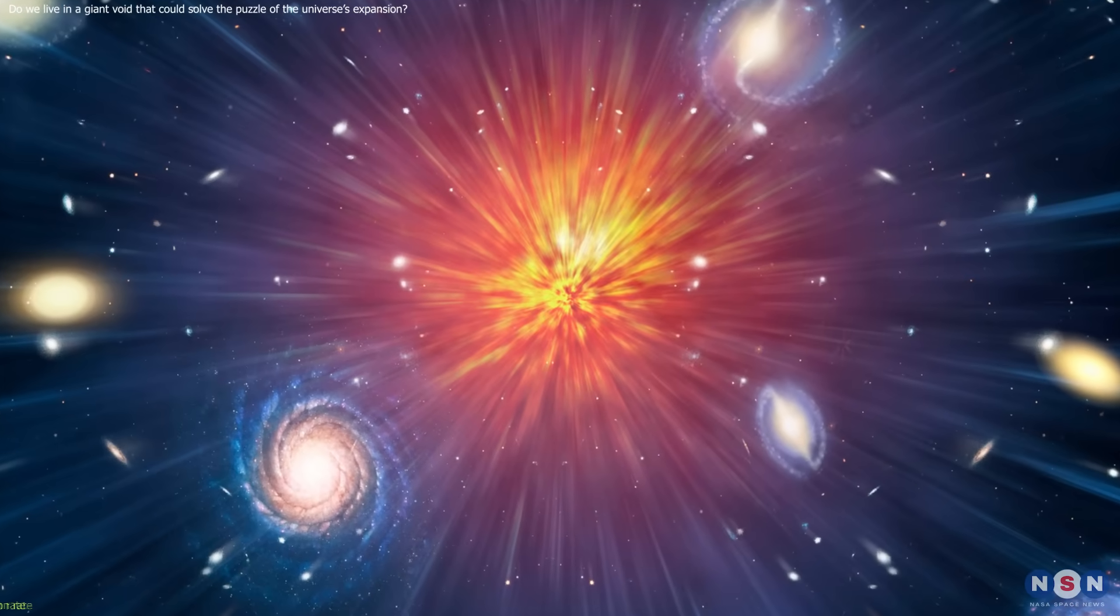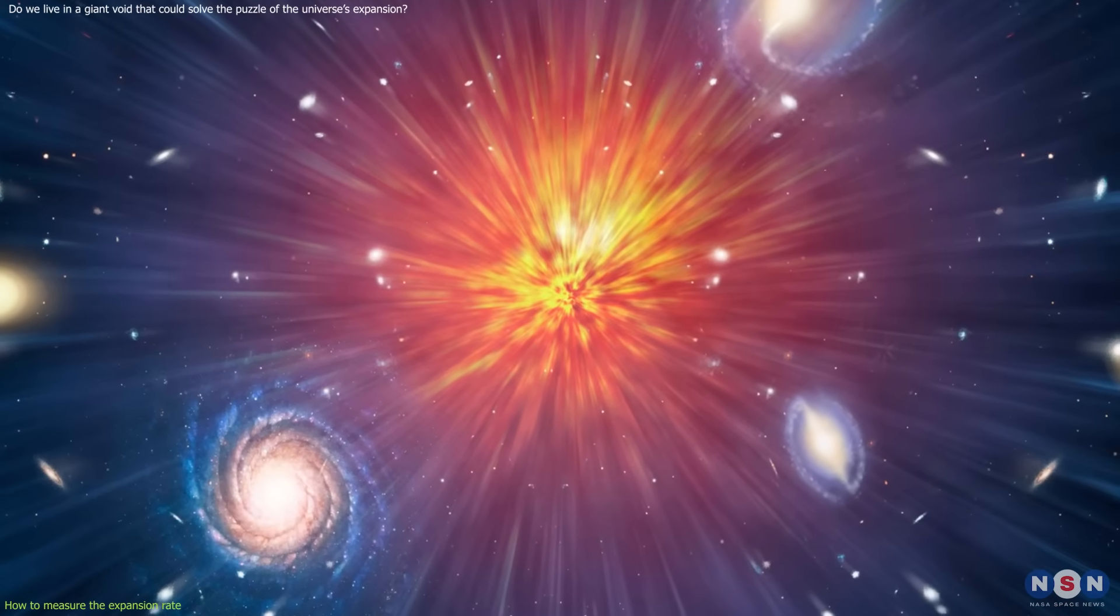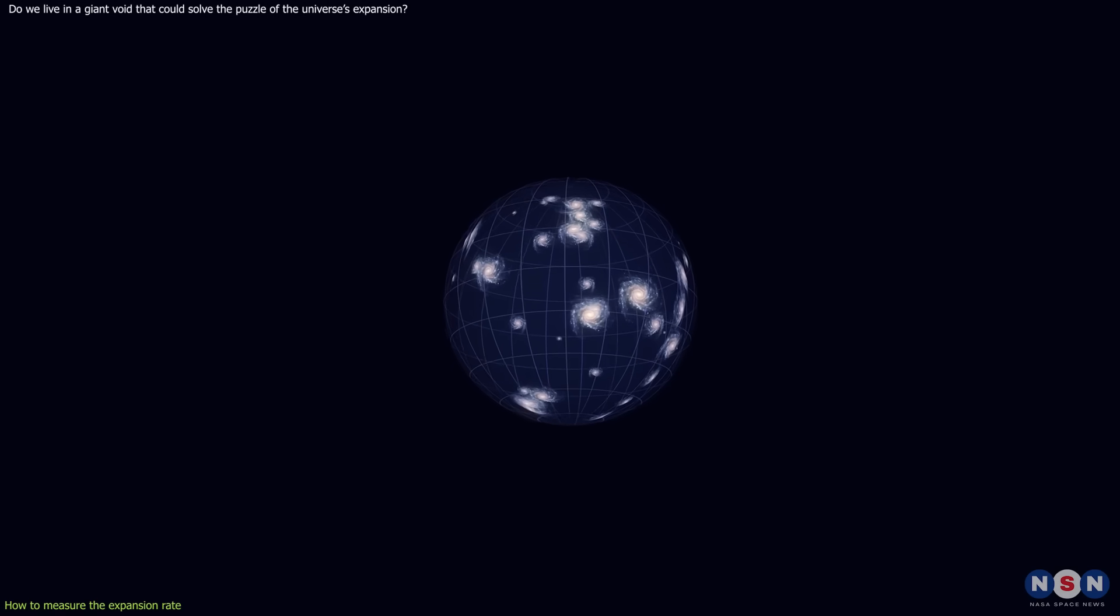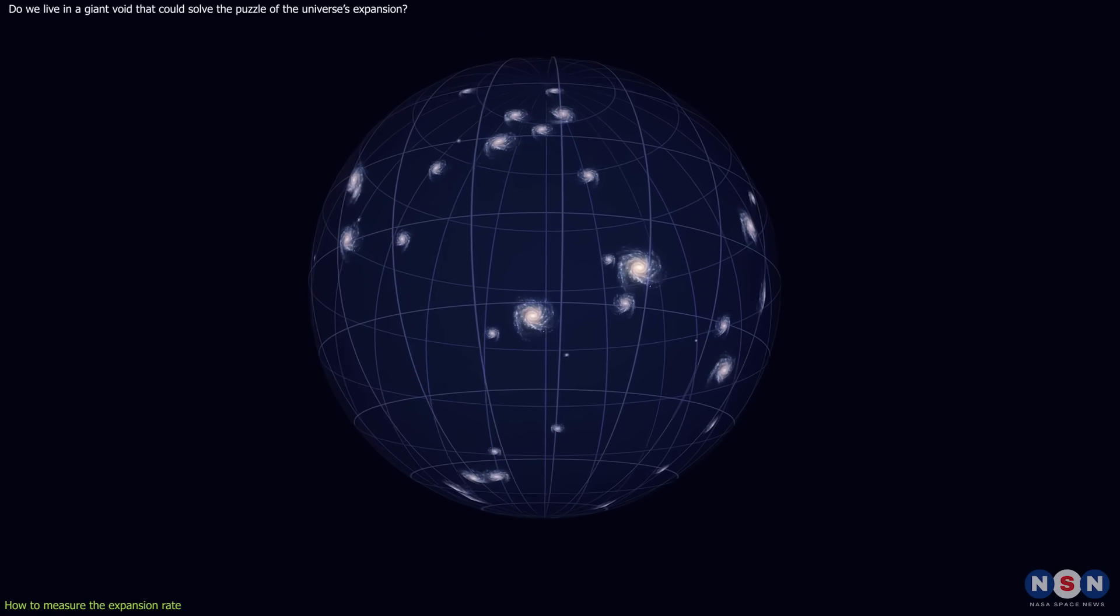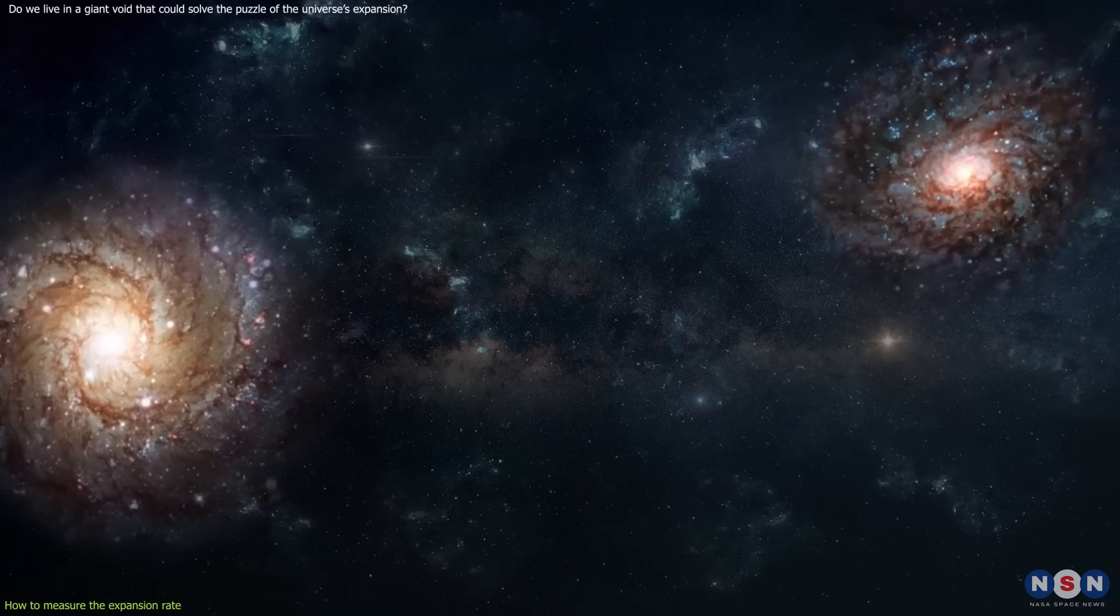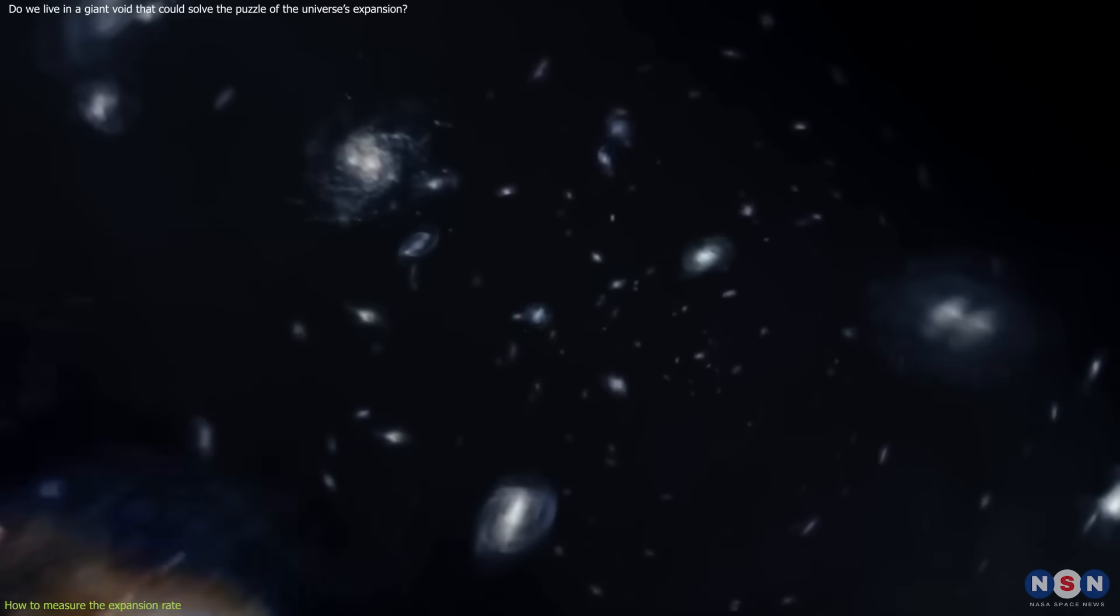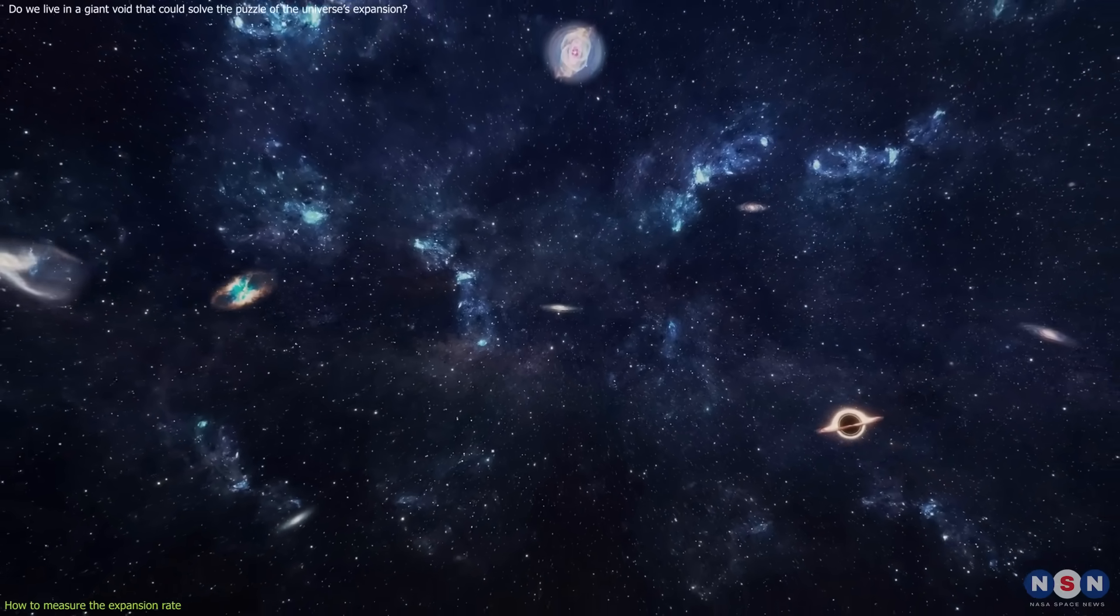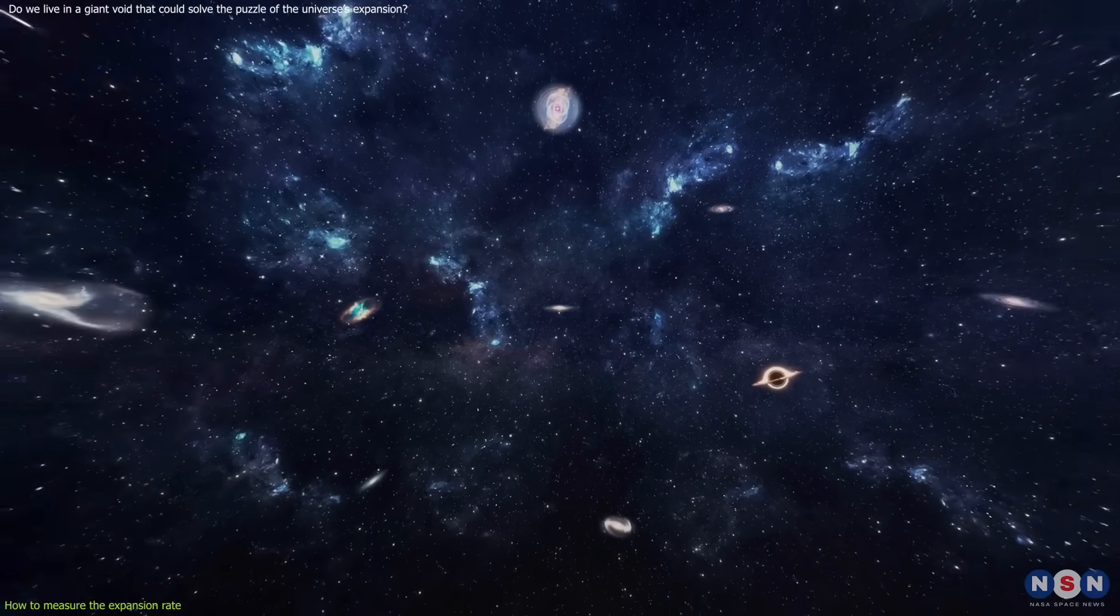The expansion rate of the universe is also known as the Hubble Constant, named after the astronomer Edwin Hubble, who discovered that the universe is expanding in 1929. It tells us how fast the space between galaxies is stretching, and it depends on the distance and the speed of the galaxies. The farther away a galaxy is, the faster it is moving away from us, due to the expansion of space.